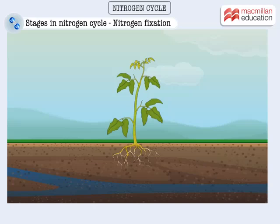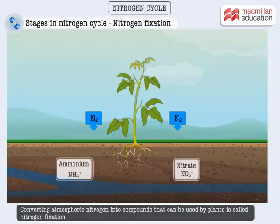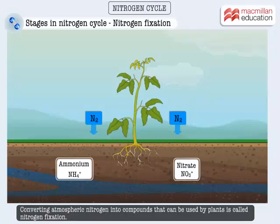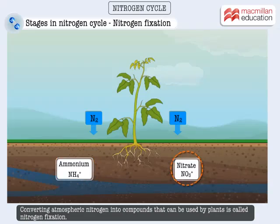The first step in the nitrogen cycle is converting nitrogen into compounds that can be used by plants. This step is called nitrogen fixation. The usable forms of nitrogen are mainly in the form of ammonium ions and nitrate ions.